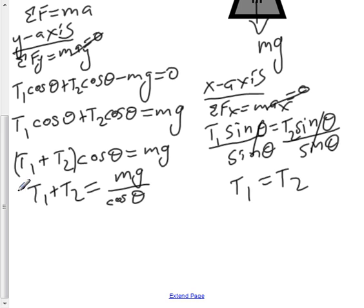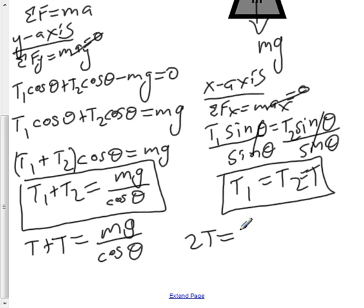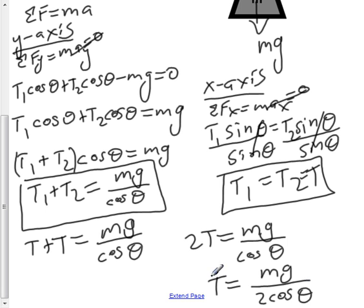Now we have these two equations. If we rewrite T1 and T2 as T, that would be T plus T equals mg over cos θ. Adding those two together, we get 2T equals mg over cos θ. Solving for T, we find that the tension in a single string is mg over 2 cos θ.